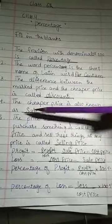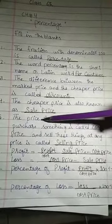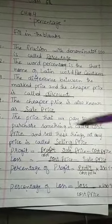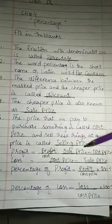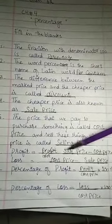Number 5: The price that we pay to purchase something is called cost price. And when we sell these things at any price, it is called selling price.